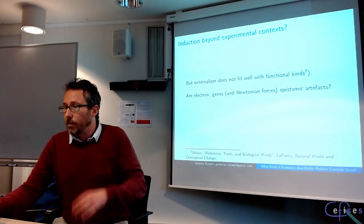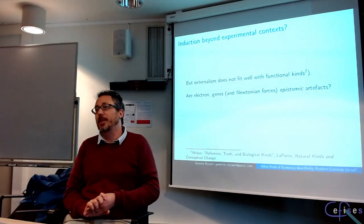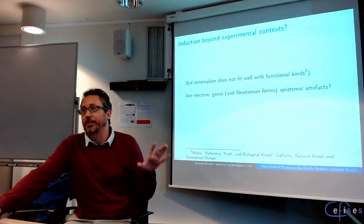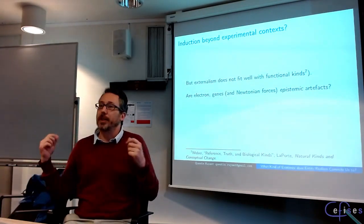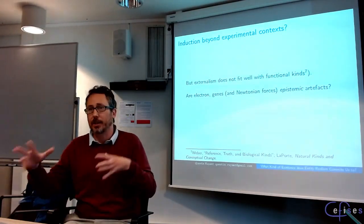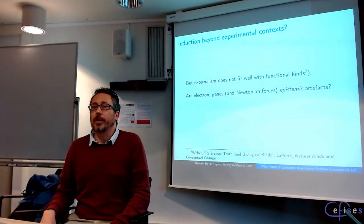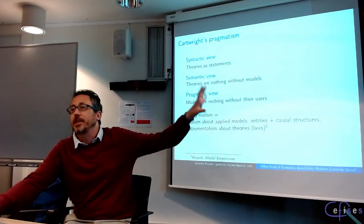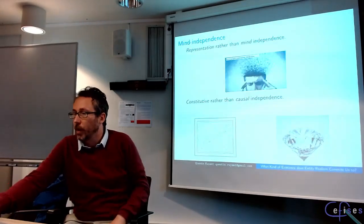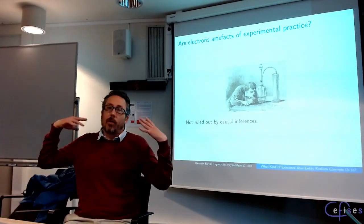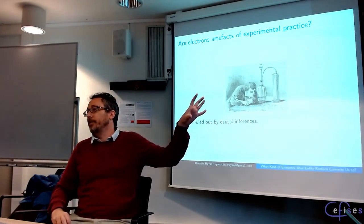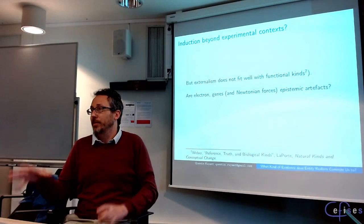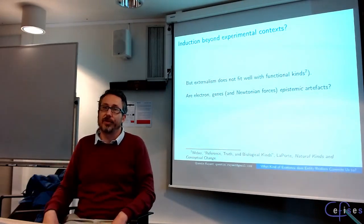A way to save entity realism might be to say we should not limit ourselves to experimental practice. Hacking put emphasis on interaction — using electrons as tools — but Cartwright a bit less so. We could say the important point is realism about applied models, and models can be applied even without direct interaction: we can have models of remote stars that are very successful for prediction, and say the model correctly represents the phenomena even if there is no direct causal interaction.